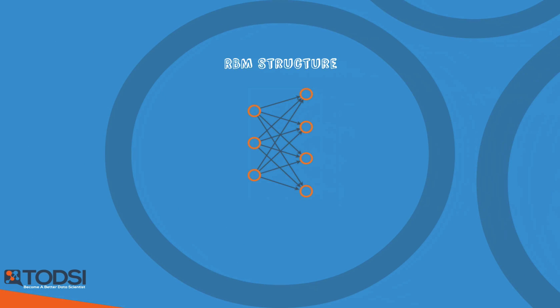An RBM is a shallow, two-layer net. The first layer is known as the visible layer, and the second is called the hidden layer. Each node in the visible layer is connected to every node in the hidden layer. An RBM is considered restricted because no two nodes in the same layer share a connection.